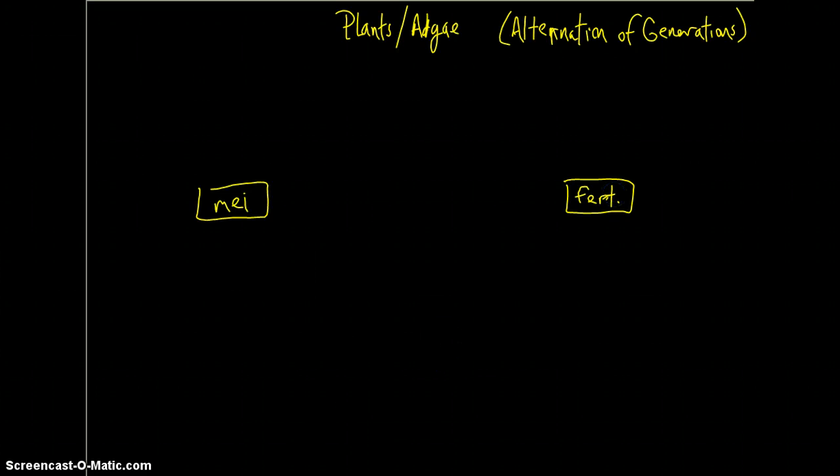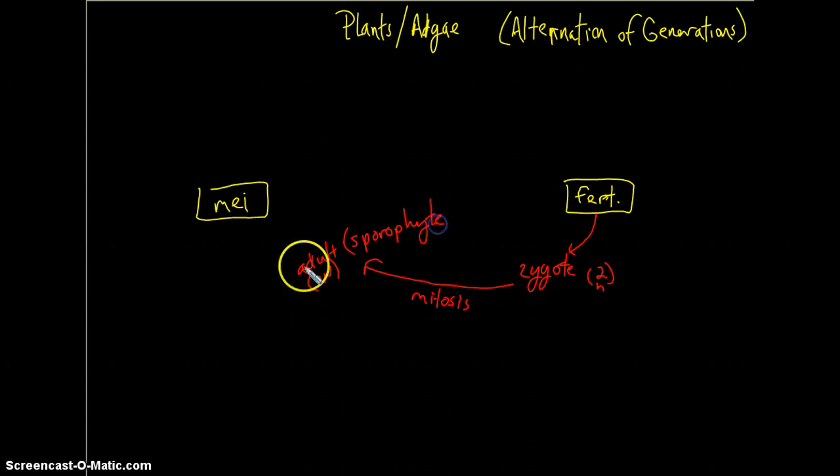Now, let's again start it off with the creation of this diploid zygote. So a 2N zygote, again, grows through mitosis to create a diploid adult. So it's 2N. Now, this diploid adult is referred to as a sporophyte.